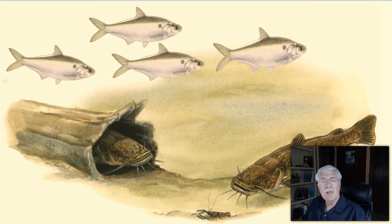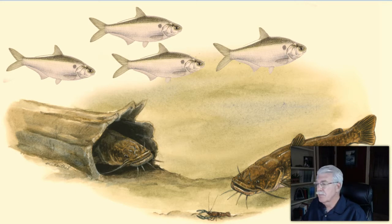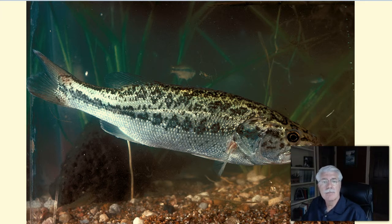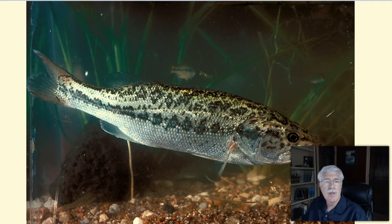Let's take a look at gizzard shad and largemouth bass. They both also make their homes in Texas's large reservoirs. Gizzard shad feed mostly by grazing on microscopic plants and animals called plankton, and if necessary, they can also eat some very small aquatic invertebrates. On the other hand, a large largemouth bass hunts and eats other fish and crayfish.